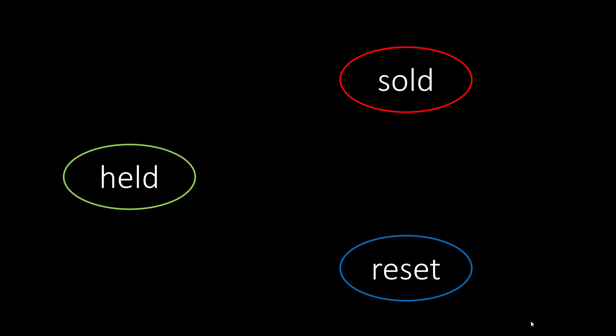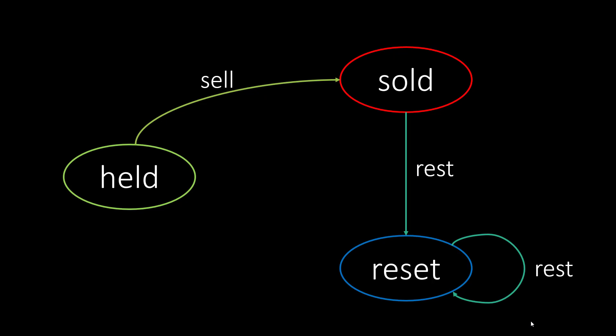A person can go into the sold state after selling a stock, which means that he was in the held state. He sold the stock he was holding and then went into the sold state, so now that person does not have any stock. From the sold state he needs to rest, bringing him into a reset state. From the reset state he can either stay in the reset state or buy the stock and go into the held state. In the held state a person can also rest in the same state while holding the stock and not selling it.